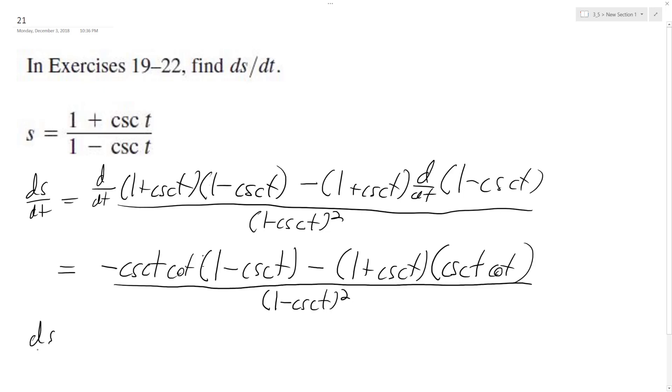And what this all simplifies down to is these two combined, negative cosecant t cotangent t, all over 1 minus cosecant t squared.